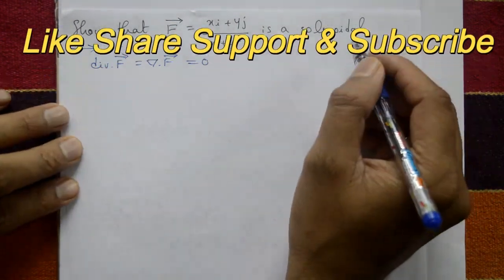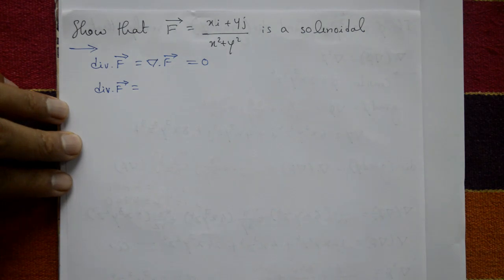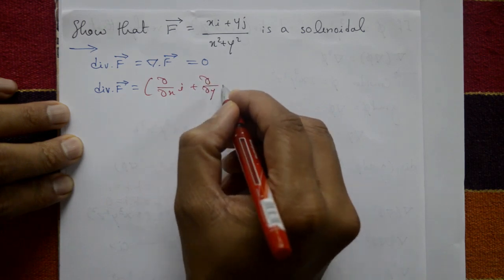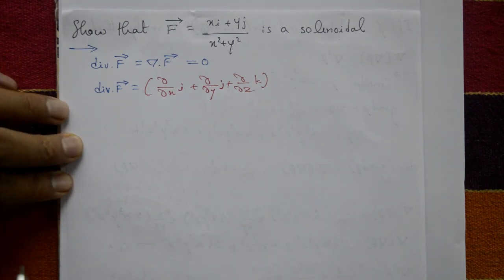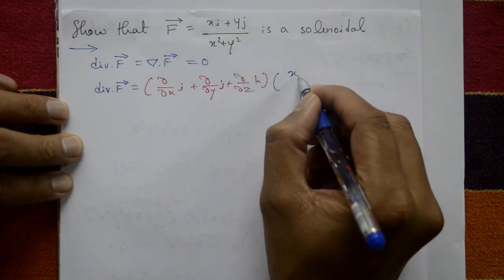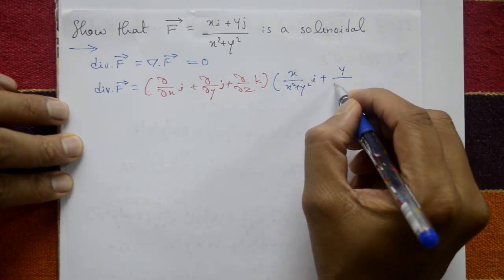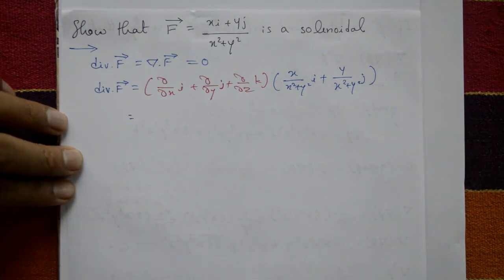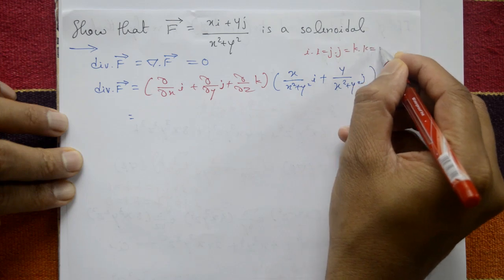Divergence of F is: ∂/∂x into i plus ∂/∂y into j plus ∂/∂z into k, dotted with vector F. We separate F as x/(x²+y²) into i plus y/(x²+y²) into j. Using the property i·i = j·j = k·k = 1.